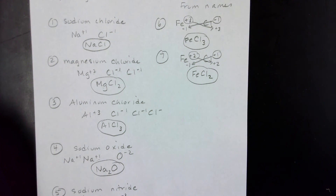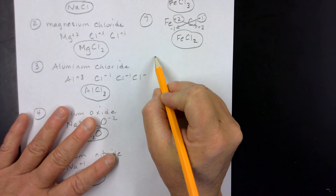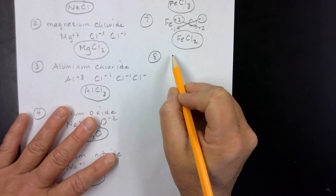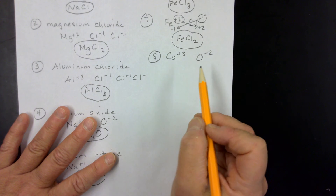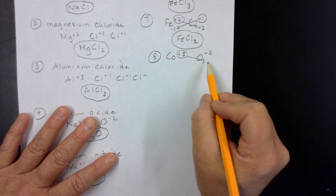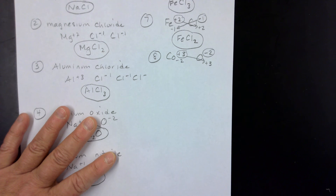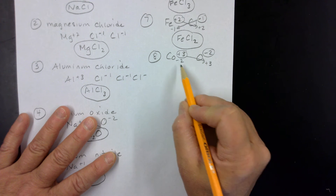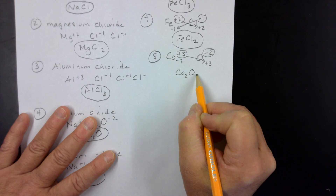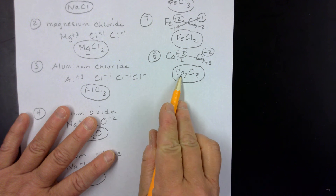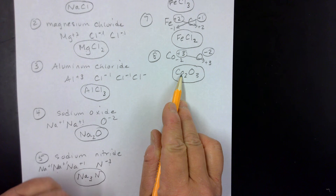Let's look at a couple more examples starting from ions. Example eight: Co plus three and O minus two. Crisscross drop and swap — plus three becomes the subscript on oxygen, minus two becomes the subscript on cobalt. Drop any charges, and this becomes Co₂O₃. Make sure to write the 'o' in cobalt as lowercase so it isn't confused with the element oxygen.